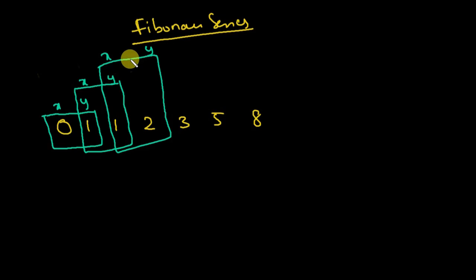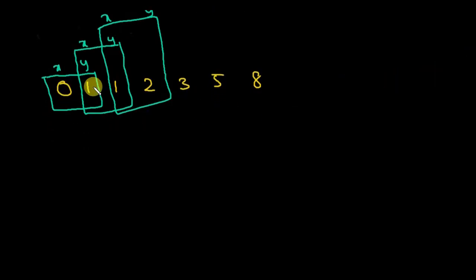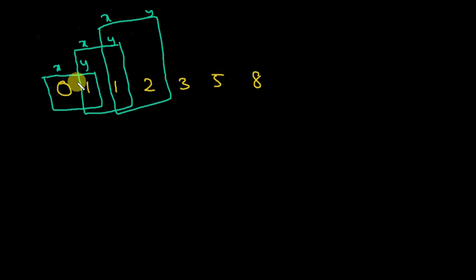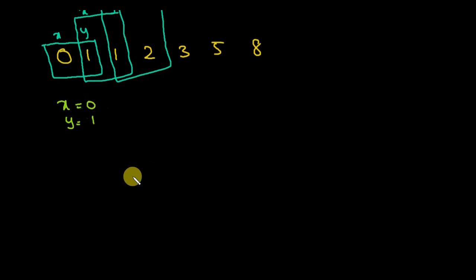Each block has X and Y values on top representing the corresponding values below. When we add 0 plus 1, the result needs to be stored as the next term. Similarly, adding 1 plus 1 gives the next value stored in place of Y. So first, we initialize X equal to 0 and Y equal to 1, then we find the next value as the addition of X and Y.